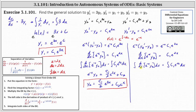For the third equation, integrating the left side gives e to the negative x times y three. On the right we have c one divided by two e to the two x plus c three. Multiplying both sides by e to the x gives y three equals c one divided by two e to the three x plus c three e to the x.